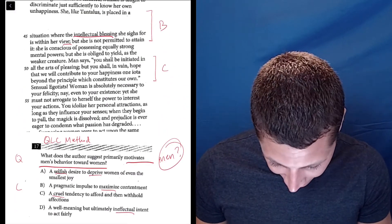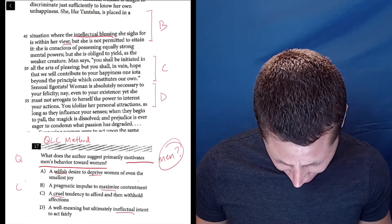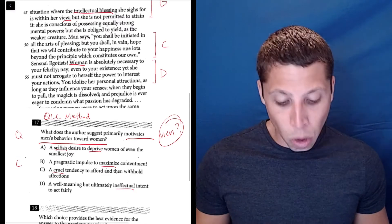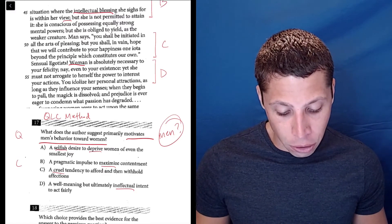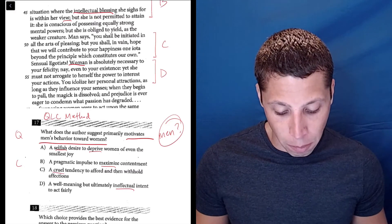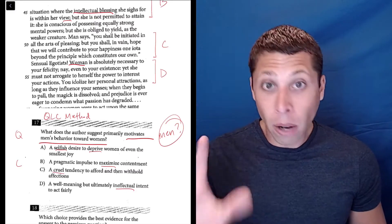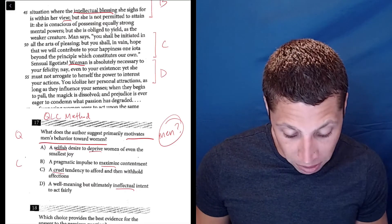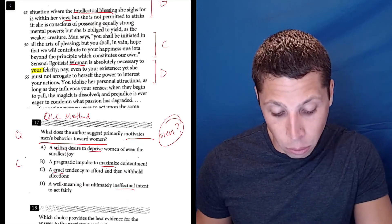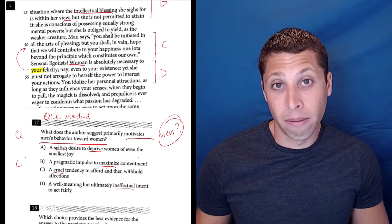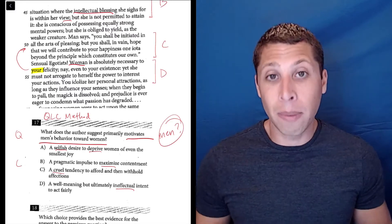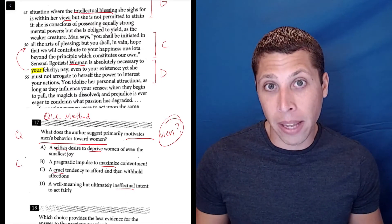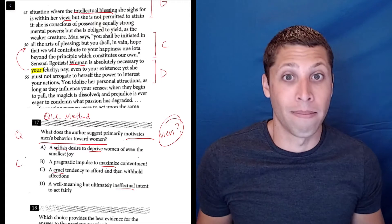Lines 53 to 56: 'Woman is absolutely necessary to your felicity, nay, even to your existence, yet she must not arrogate to herself the power to interest your actions.' Now, I know it starts with woman, whereas the other one starts with man, but this is a good example where something is very clearly referencing something else. Who's felicity? Well, we're talking about men's felicity. So men are still being talked about here. I would still keep line reference D in the mix because it's kind of still about men.